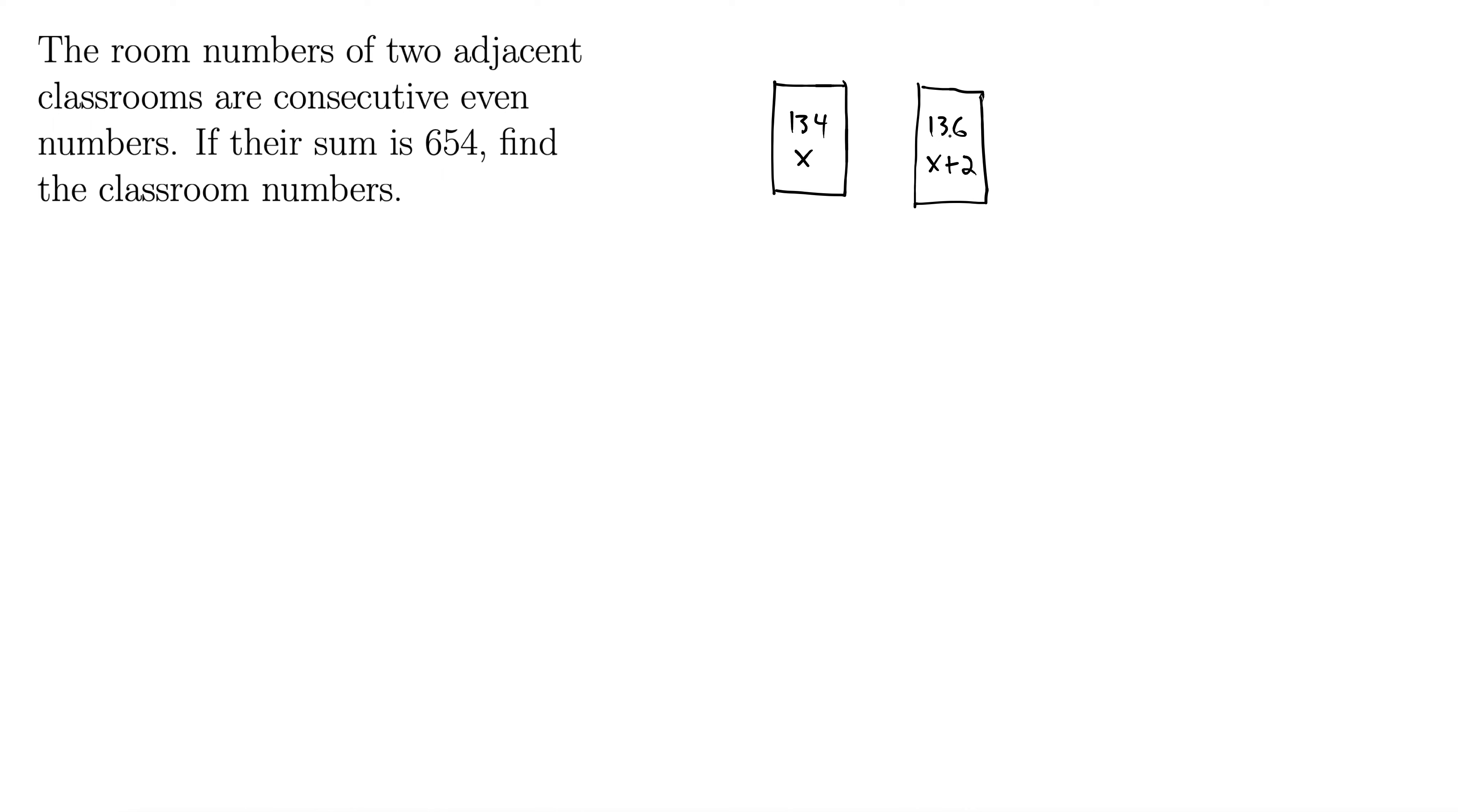So 134 plus two is 136, but no matter where we started, remember, these are just, I was just guessing, they're arbitrary, but no matter what we start with, x, the second one, the next one is going to be x plus two.